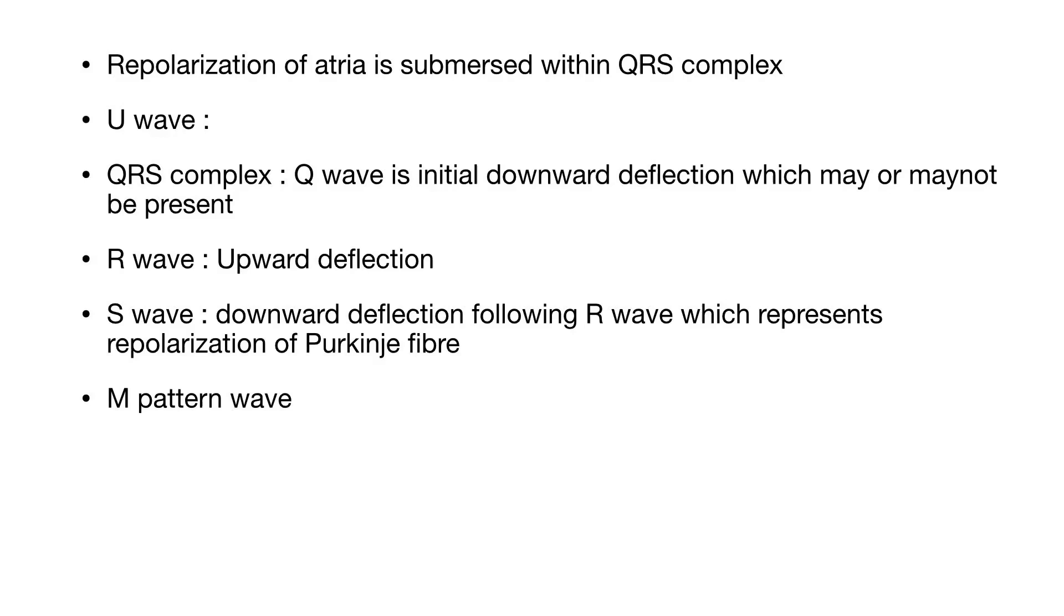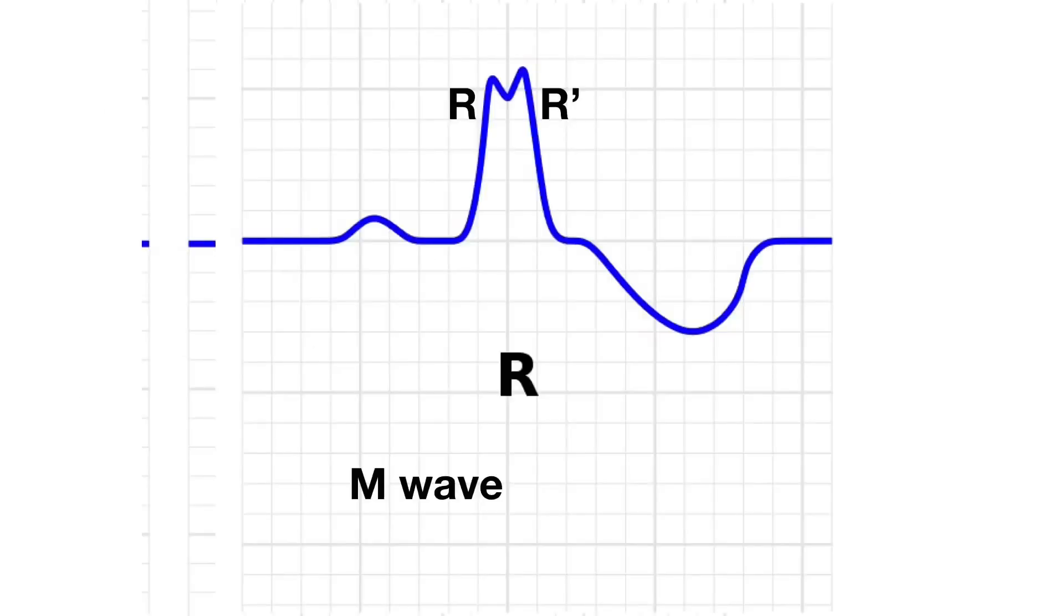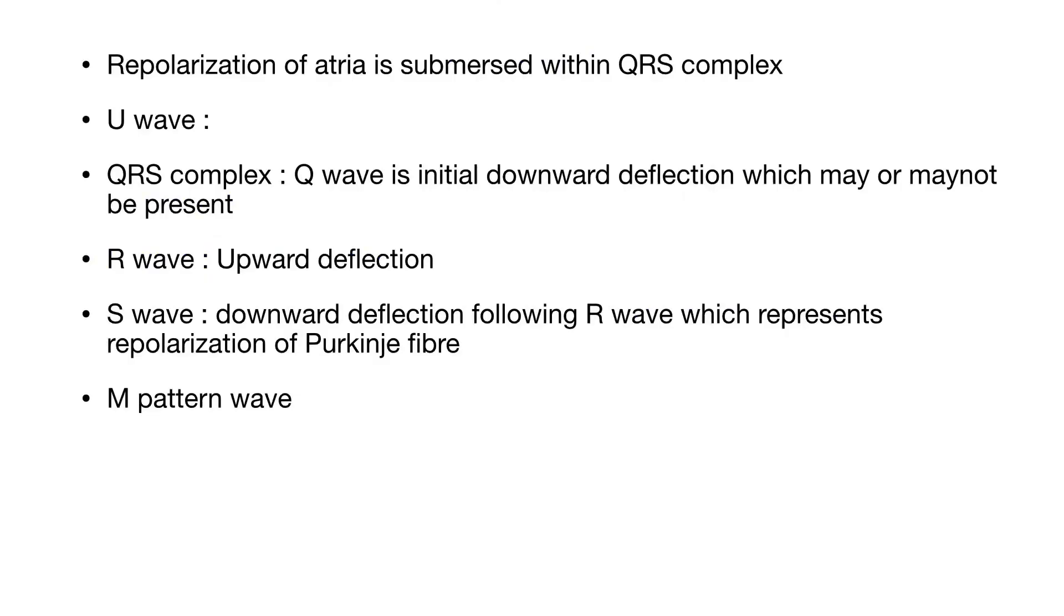S-wave is the downward deflection following R-wave which represents repolarization of Purkinje fibres. Sometimes we get M pattern where R-prime is the second upward deflection following R-wave and S-wave is the downward deflection after R-prime.